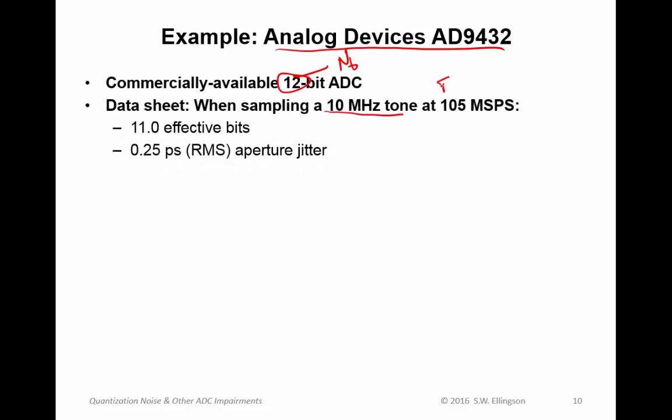If you look at the data sheet, it'll say that when it's sampling a 10 megahertz tone using a sample rate of 105 megasamples per second, the effective number of bits is 11.0. By the way, note ENOB can be a fractional number because it's not an actual number of bits. The aperture jitter of this particular device is 0.25 picoseconds RMS.